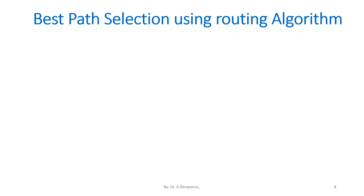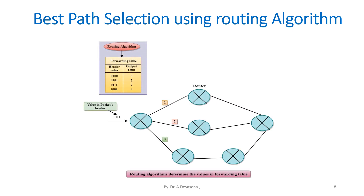Best path selection using routing algorithm: Here we have data in the form of a packet that has to reach its destination. With the help of the router, the best path, that is the optimized path, is being selected. Through this optimized routing algorithm, it reaches the destination, as indicated in the diagram.